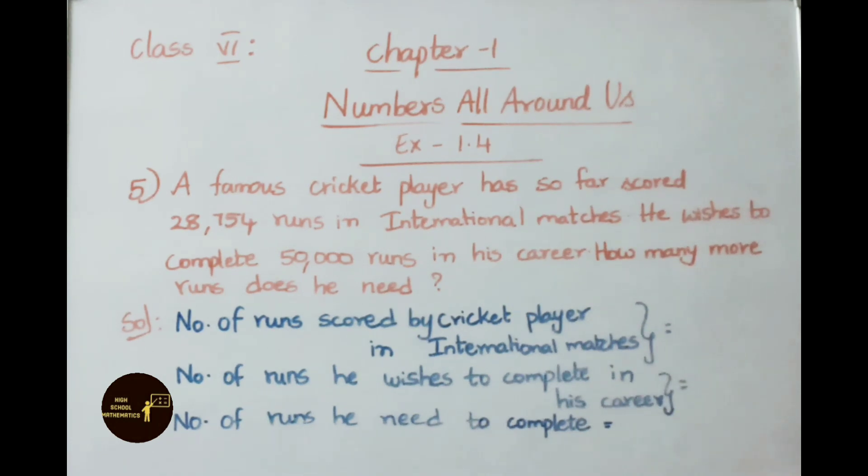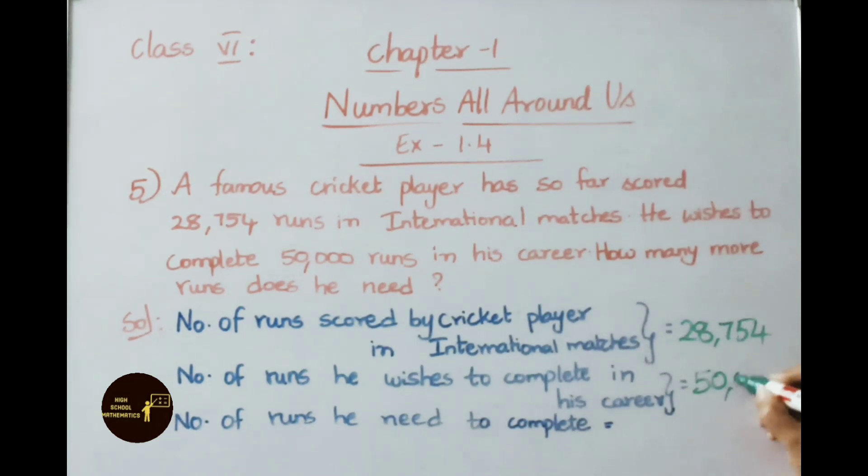We need to find out now. See the solution. Number of runs scored by cricket player in international matches: 28,754. Number of runs he wishes to complete in his career: 50,000. Therefore, number of runs he needs to complete, we need to find now. Subtract both values: 50,000 minus 28,754. If you take borrow from 5, first digit will come 10, remaining 9, and this 5 becomes 4. Now let us subtract: 10 minus 4 is 6, 9 minus 5 is 4, 9 minus 7 is 2, 9 minus 8 is 1, 4 minus 2 is 2. So 21,246 runs he needed more to complete.